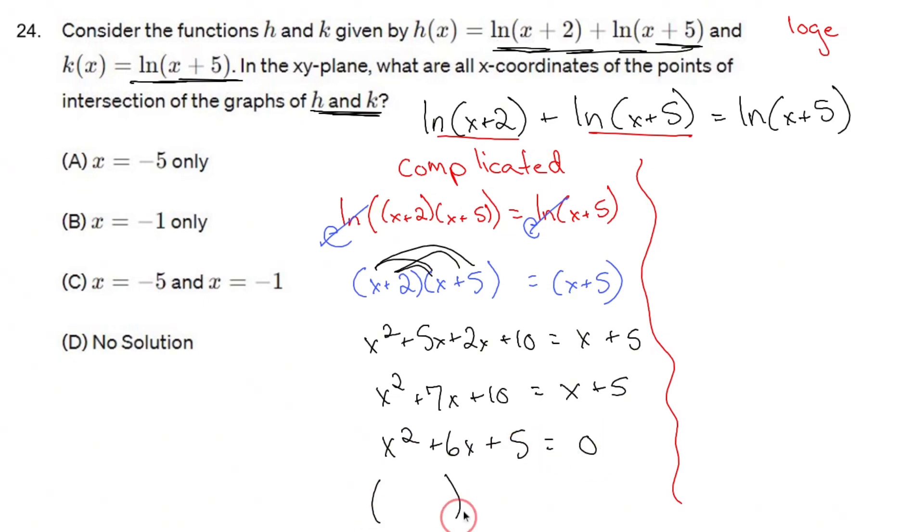Use the zero product property to factor that out, and you'll get x plus 1 times x plus 5 equals 0. What that means is your possible zeros using the zero product property is going to be negative 1 and negative 5.